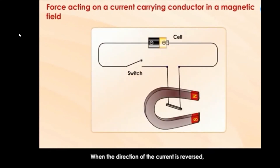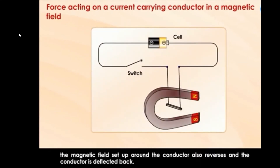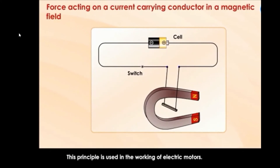When the direction of the current is reversed, the magnetic field set up around the conductor also reverses and the conductor is deflected back. This principle is used in the working of electric motors.